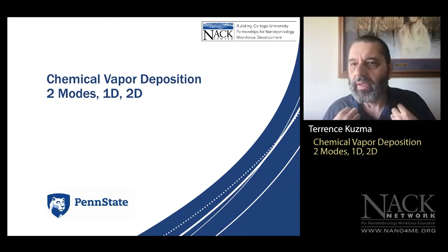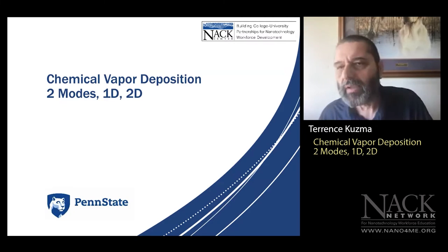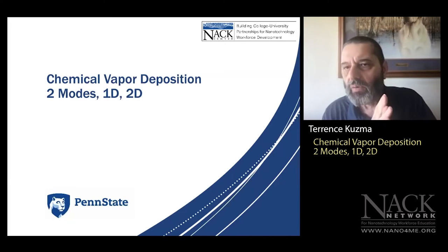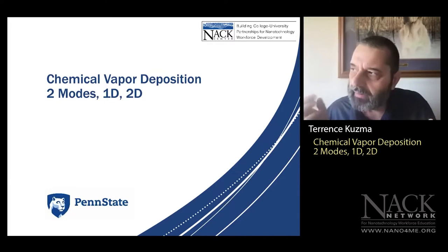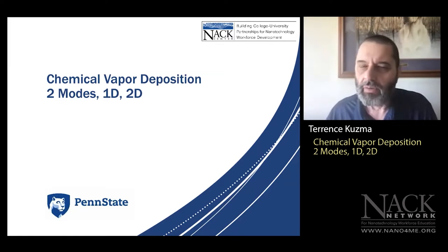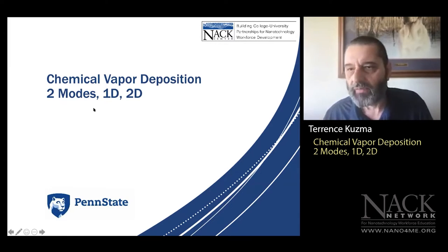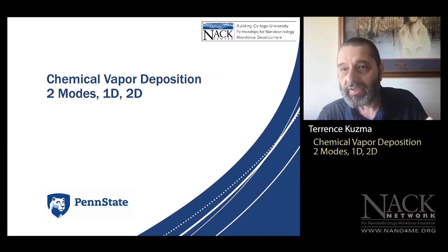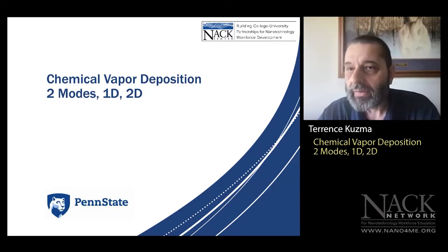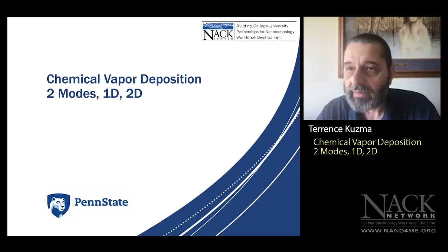PECVD is more conducive for depositions on polymers. Looking at advantages and disadvantages, temperature is the main difficulty. We're going to look at two modes of operation: making nanowires, called VLS processing, and making thin films, called VS processing.